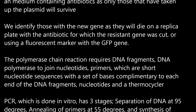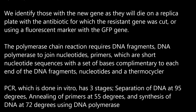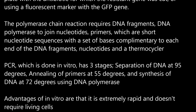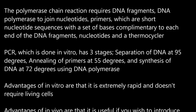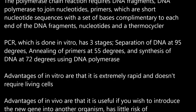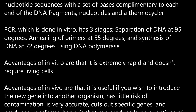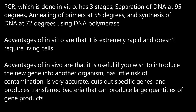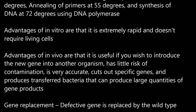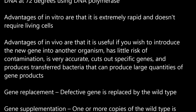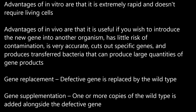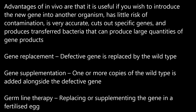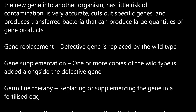The polymerase chain reaction requires DNA fragments, DNA polymerase to join nucleotides, primers — which are short nucleotide sequences with a set of bases complementary to each end of the DNA fragments — nucleotides, and a thermocycler. PCR, which is done in vitro, has three stages: separation of DNA at 95°C, annealing of primers at 55°C, and synthesis of DNA at 72°C using DNA polymerase. Advantages of in vitro are that it is extremely rapid and doesn't require living cells. Advantages of in vivo are that it is useful if you wish to introduce the new gene into another organism, has little risk of contamination, is very accurate, cuts out specific genes, and produces transformed bacteria that can produce large quantities of gene products.